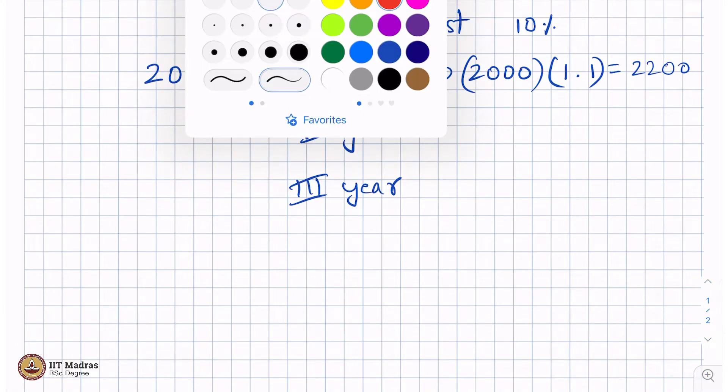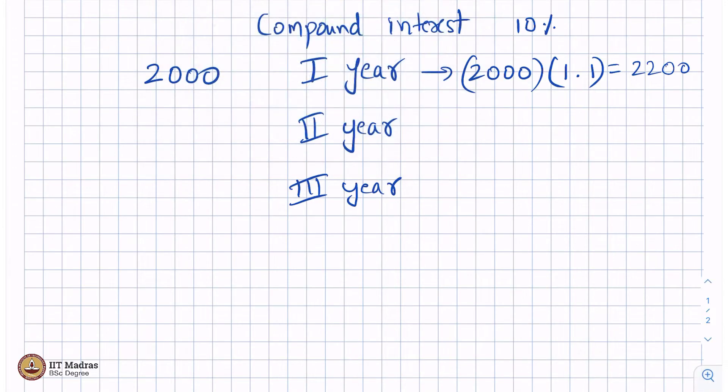Because I like writing it that way, I'm forcing you all to think that way - I'm sorry for imposing that on you. At the end of second year, whatever you had at the end of the first year, whatever that money was, 10 percent of that gets compounded. It's 1.1 times your 2200, which is 2420.